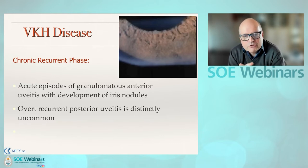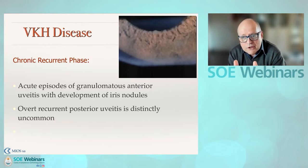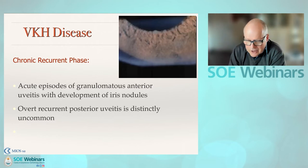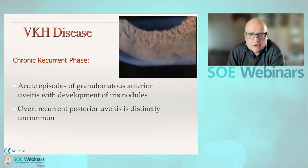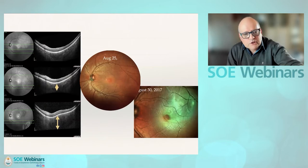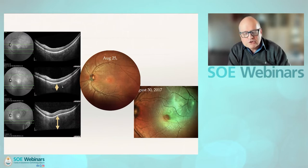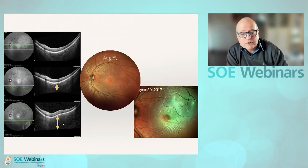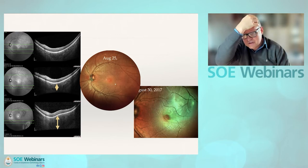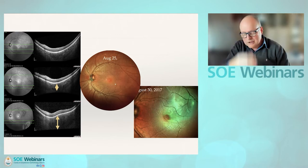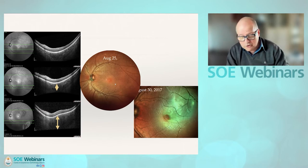Recurrences, if you get chronicity, tend to involve the anterior segment, causing iris nodules and granulomatous disease. In this patient, we see the initial thickened choroid, it decreases with treatment, she stops treatment, and shortly after it becomes again increased thickness in the choroid. She starts to develop folds inside the retina, and within five days gets a recurrent detachment — which responded very well to Humira. She stayed on another two years on Humira and then was able to wean off.